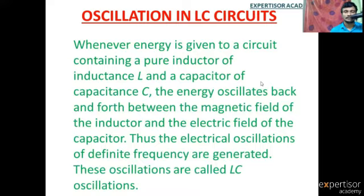The inductor stores magnetic energy given by L i squared by 2, where L is the coefficient of inductance and i is the current. So the inductor energy is L i squared by 2.